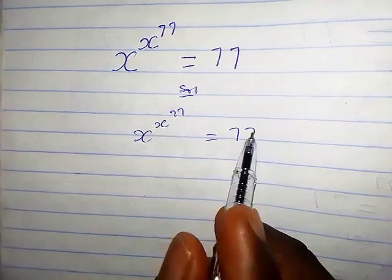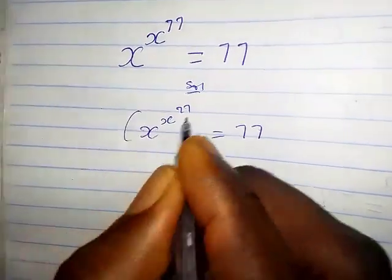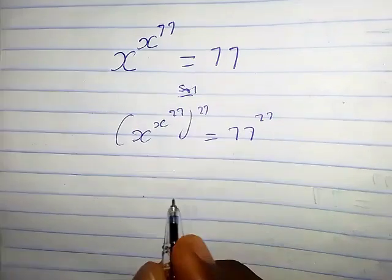So let's multiply both exponents by 77. So we're going to have 77 here and 77 here.